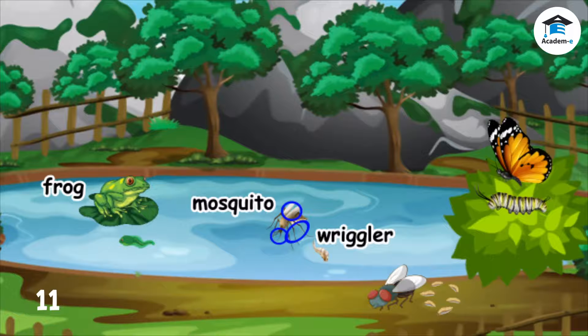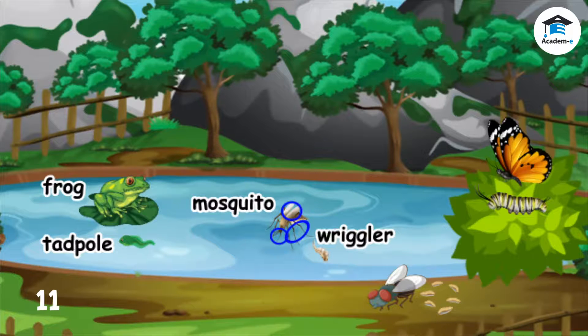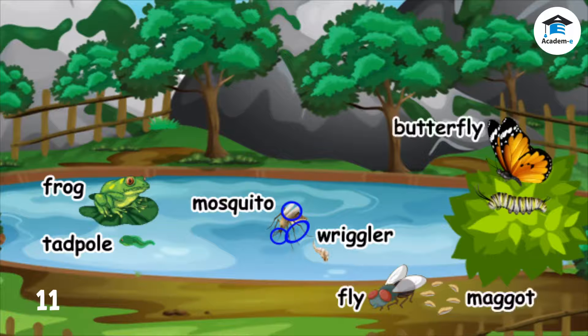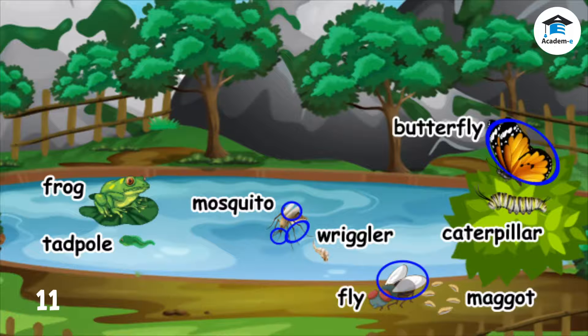The young of a frog is a tadpole. Can you tell why a tadpole looks different from its parent? What body parts does a frog have that a tadpole does not have? The young of a fly is a maggot. The young of a butterfly is a caterpillar. Maggots and caterpillars do not have wings that their parents have. How are these two young animals the same? How are they different from other animals?